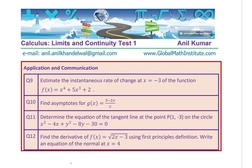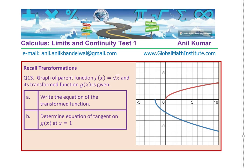Let's move on to question number thirteen — recall transformations. The graph of parent function f of x equals the square root of x is the parent function, and its transformed function g of x is given. Write the equation of the transformed function; note that this point here is minus two. Determine the equation of the tangent on g of x at x equals 1.